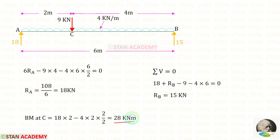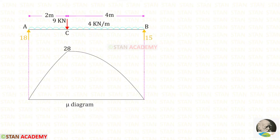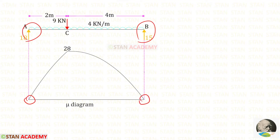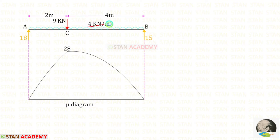Now using this value we can draw the bending moment diagram. Here you can see the bending moment diagram. At points A and B the moment is zero. At point C we have found the moment of 28. Since there is a uniformly distributed load for the full span, the diagram should be parabolic in shape. This diagram is called the mu diagram.